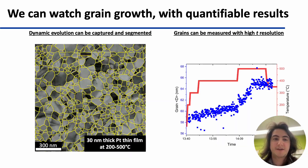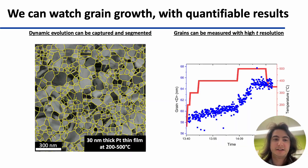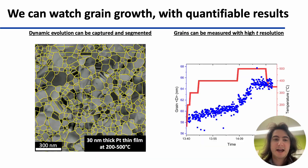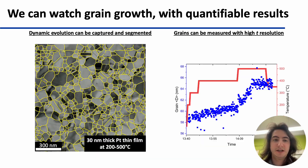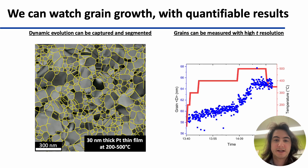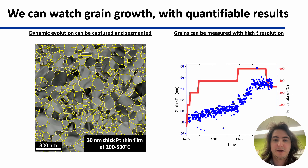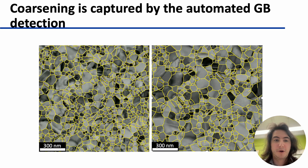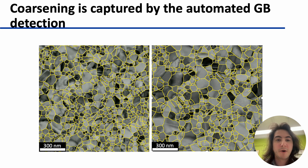On the left you can see micrographs collected during an in-situ heating experiment over the course of about 40 minutes, and as you watch you'll see the grains coarsen. This corresponds to the increasing grain size you see in this plot here, as well as the increasing temperature. You can see very clearly that coarsening is captured by this grain boundary detection algorithm.